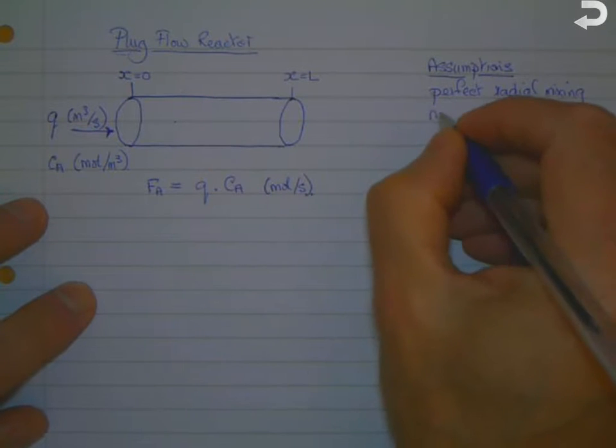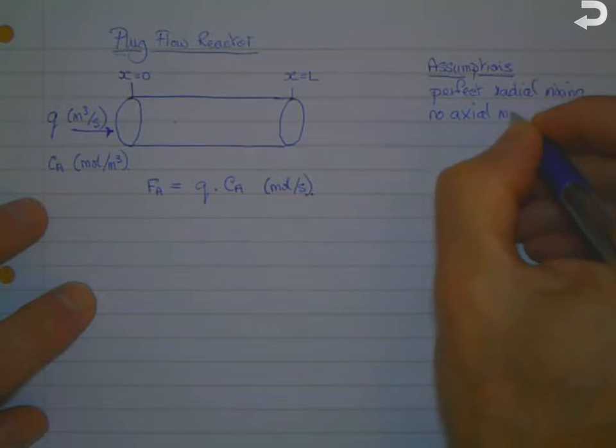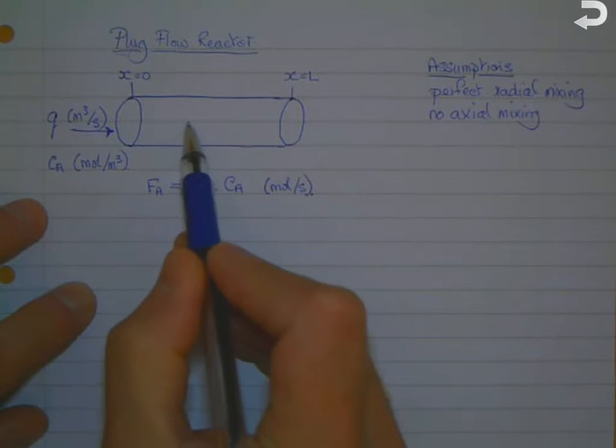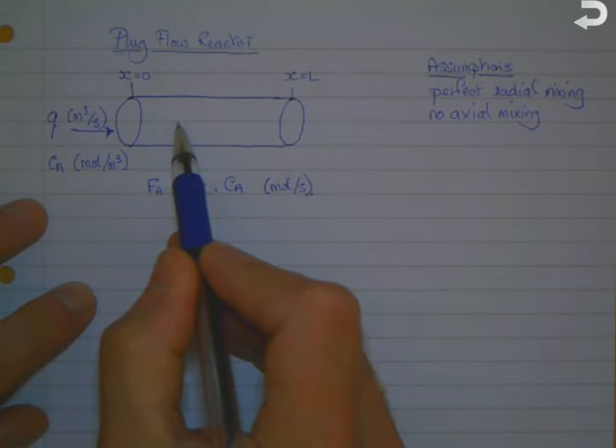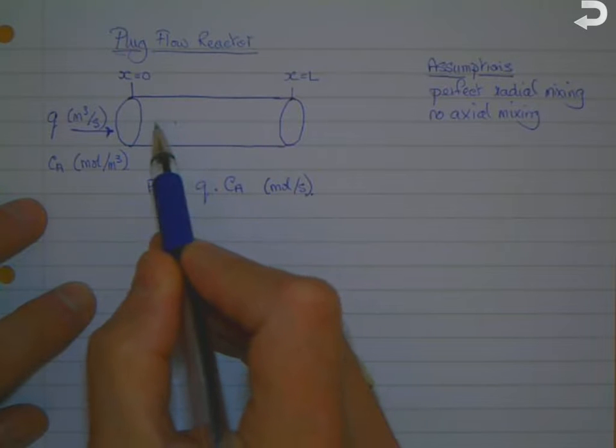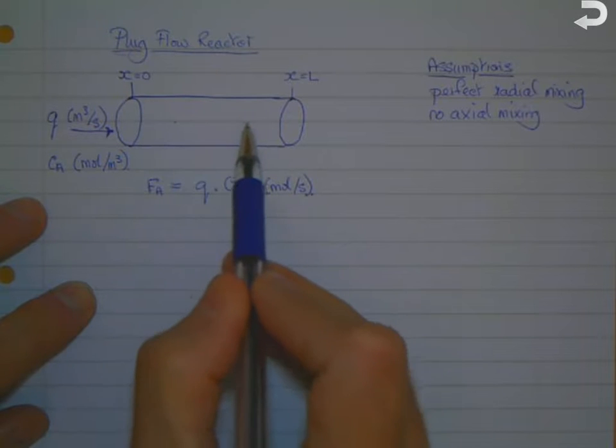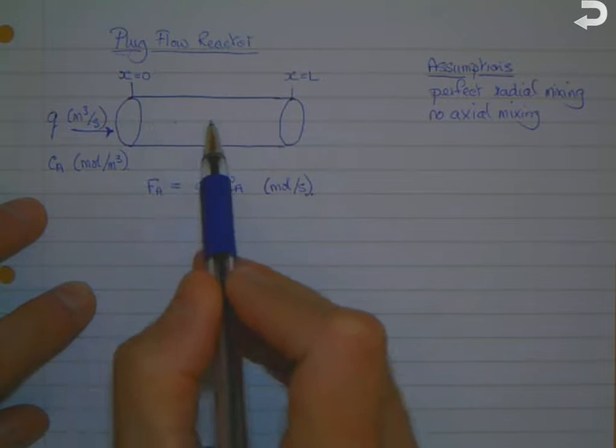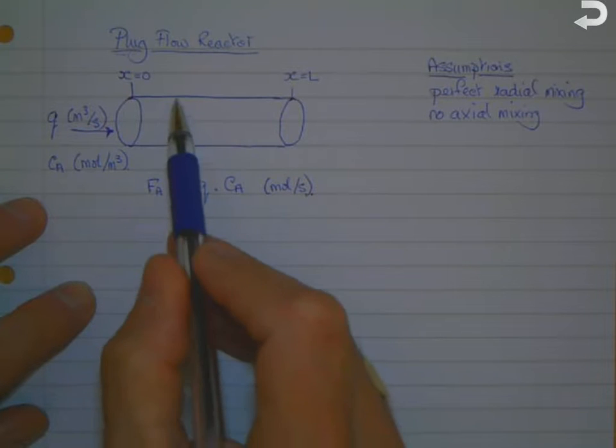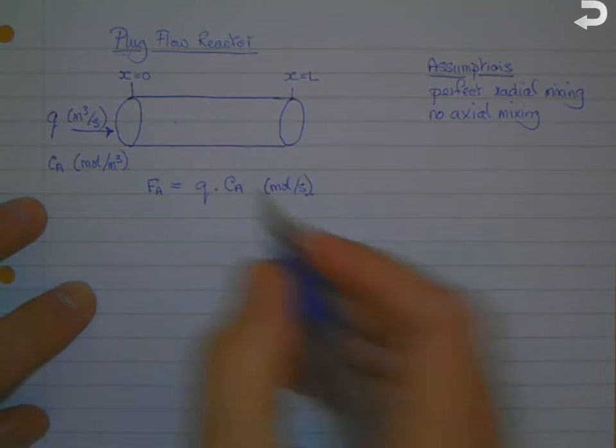We're also going to assume that we have no axial mixing, so that means as fluid flows along here, material at that point x doesn't mix with any of the material ahead of it and it doesn't mix with any material that's behind it. This is the definition of plug flow. There's no forward and backward mixing, and conditions right across the radius are the same.